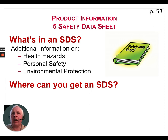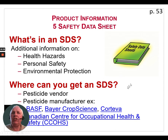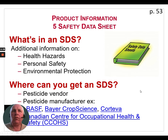For example, a safety data sheet will give you the LD50 of the product, rather than just a range inferred from warning symbols on the principal display panel. Safety data sheets can be obtained from pesticide vendors, manufacturers, and the Canadian Centre for Occupational Health and Safety. Be certain to obtain the Canadian version, as there can be differences between versions, and it's most important to use the correct Canadian documents.